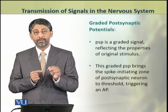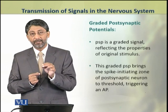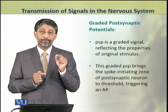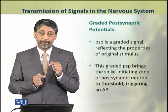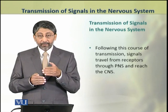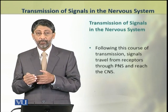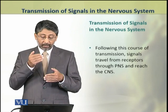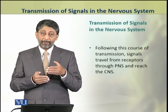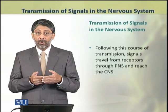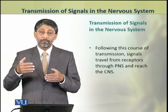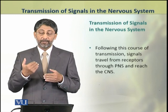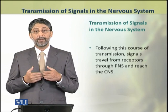This graded postsynaptic potential again brings the spike-initiating zone of the postsynaptic cell to threshold, triggering an action potential in the postsynaptic cell. In this way, the signal from one cell is transferred to the other cell, involving both electrical and chemical forms, as well as graded and regenerative action potential patterns. These signals move through the peripheral nervous system and the central nervous system.